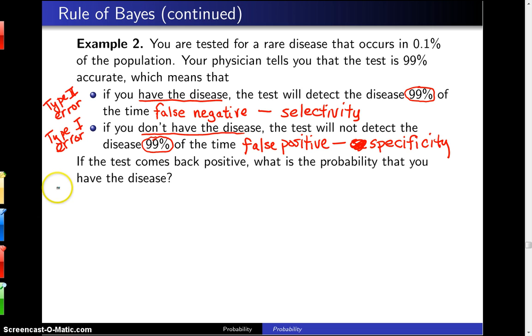The first step in solving this problem is to define the events. And we are going to let the event D be that you have the disease. And we don't need a new letter here, we can just use D' for the event that you don't have the disease. And finally, T is the event that the test comes back positive.